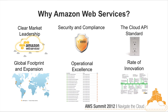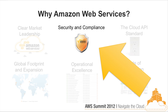On Amazon, every single instance — even the tiniest m1.small — gets exactly the same sophisticated security, compliance, and deployment controls as the giant fleets running enterprise applications. We believe we're the clear market leader. We've set the cloud API standard, with recent announcements around Eucalyptus and others following. We have a great track record of operational excellence — we measure our problems in seconds. But the real elephant in the room is security and compliance.